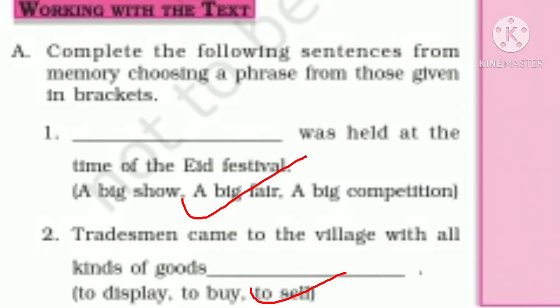Now we need to complete the following sentences from memory, choosing a phrase from those given in brackets. First: 'Dash was held at a time of Eid festival.' Options: a big show, a big fair, a big competition. Correct answer: a big fair. Second: 'Tradesmen came to the village with all kinds of goods, dash.' Options: to display, to buy, to sell. Correct answer: to sell.